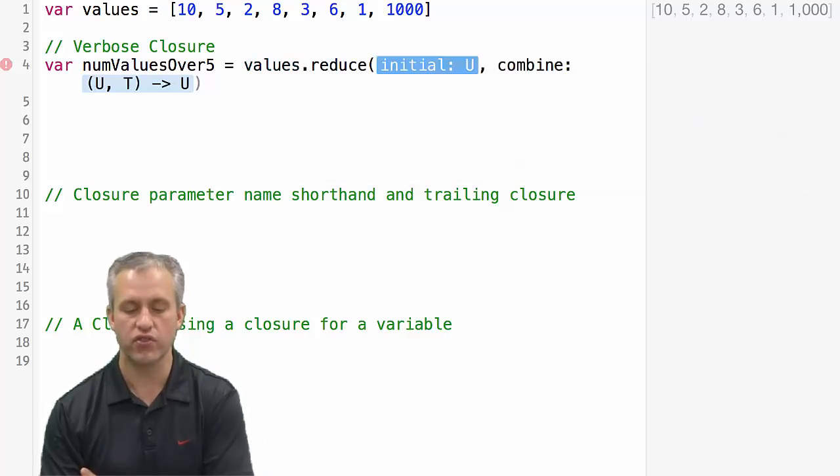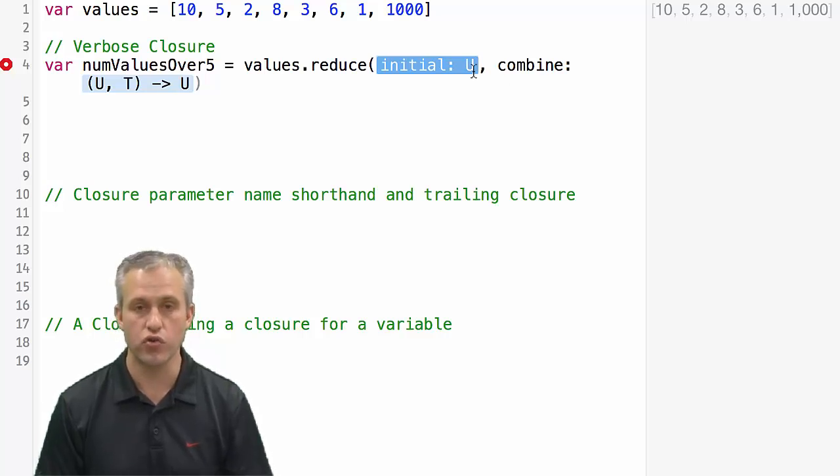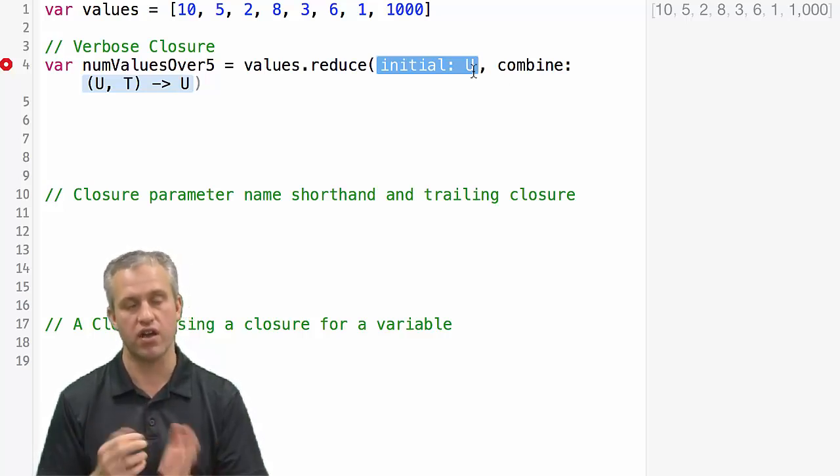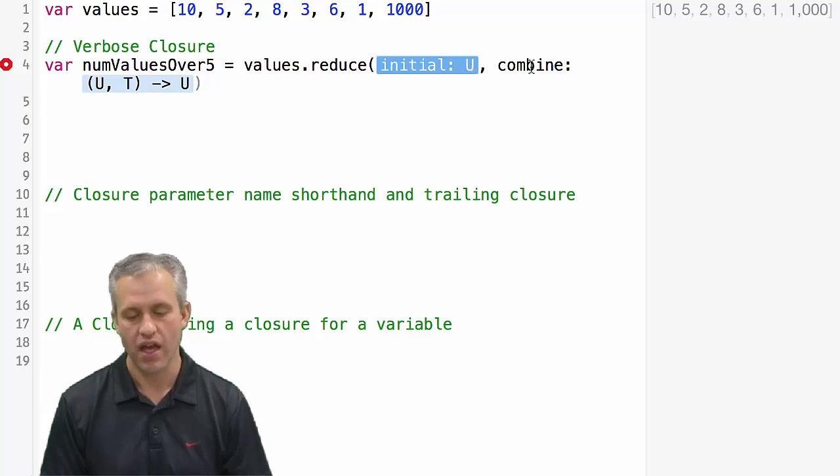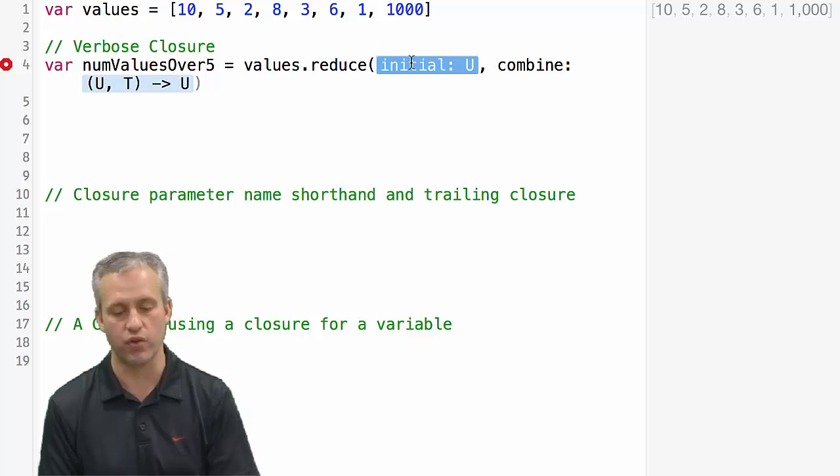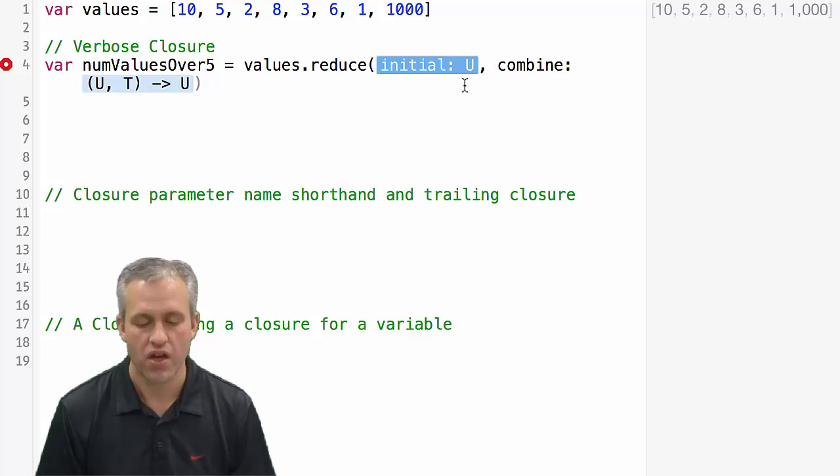So the reduce function receives two parameters. First, it receives an initial value, which you can see it's U because it's generics. So Swift uses generics, which I'm not going to go into a lot, but it's similar to generics in Java. And then the other thing it does is you have to pass in a function. So this function, you can see that what it does is it receives two parameters and it returns a parameter. They're called U, T, and U. So the U's have to be the same type of object as what the initial value was, but the T could actually be something different.